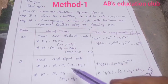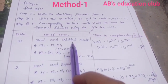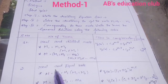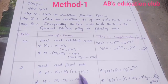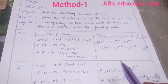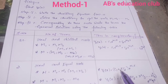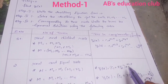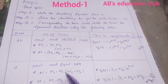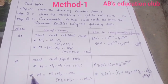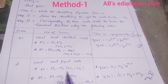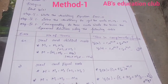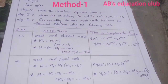Case 2: Equal/repeated roots. If m = m1, m2 where m1 = m2 (equal roots), the complementary function is yc(x) = (c1 + c2·x)·e^(m1·x). For three equal roots m1 = m2 = m3, it extends to yc(x) = (c1 + c2·x + c3·x²)·e^(m1·x).